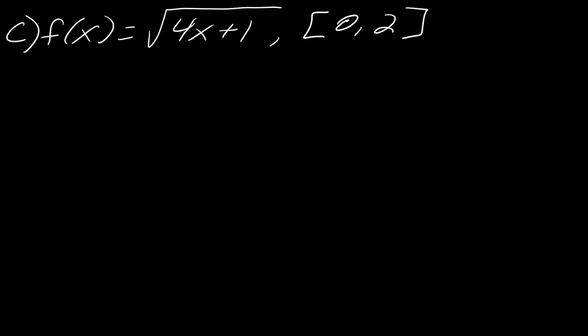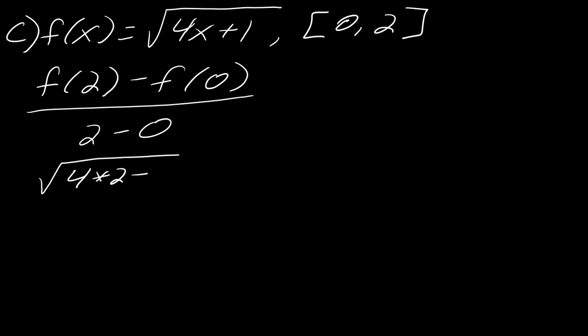And now working with the last example, so again using that same formula, I'll take f of 2 minus f of 0 over 2 minus 0. So now I'll go ahead and plug all that in. So I have square root of 4 times 2 plus 1 minus the square root of 4 times 0 plus 1, all of this over 2.